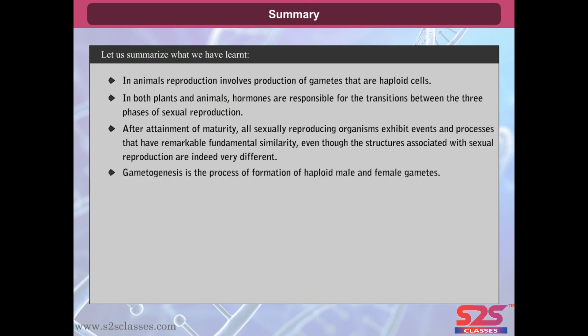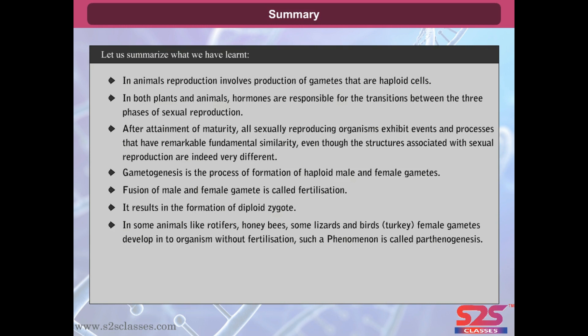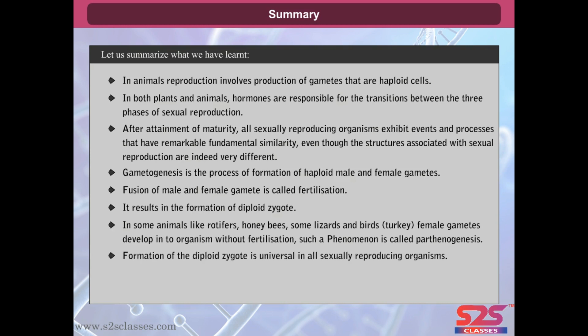Gametogenesis is the process of formation of haploid male and female gametes. Fusion of male and female gametes is called fertilization. It results in the formation of a diploid zygote. In some animals like rotifers, honeybees, some lizards and birds such as turkey, female gametes develop into an organism without fertilization; such a phenomenon is called parthenogenesis. Formation of the diploid zygote is universal in all sexually reproducing organisms. Animals may be either oviparous or viviparous.